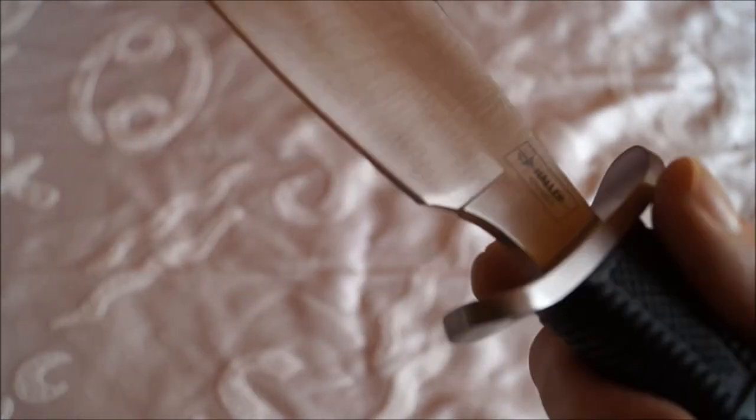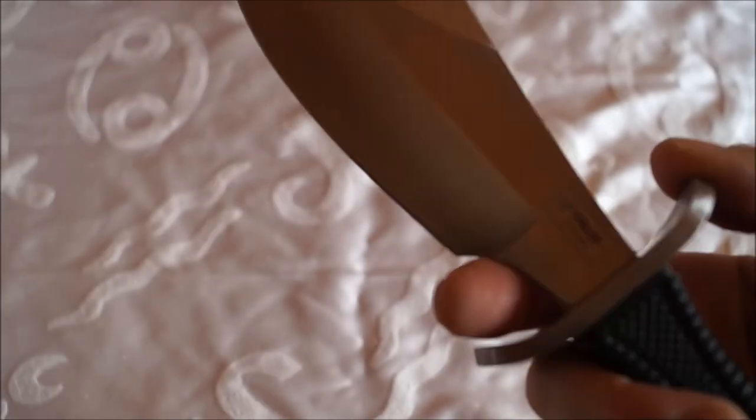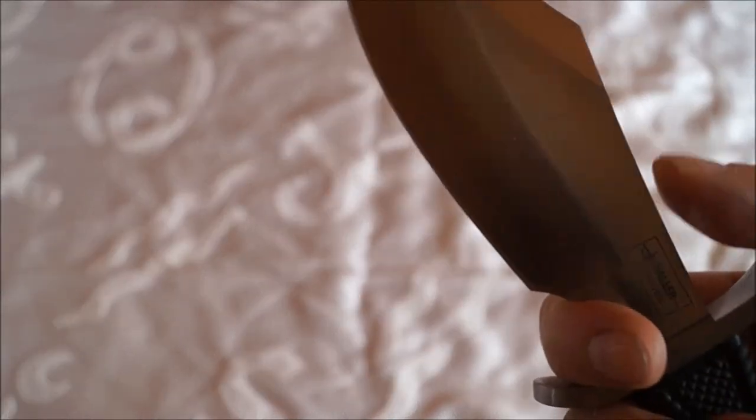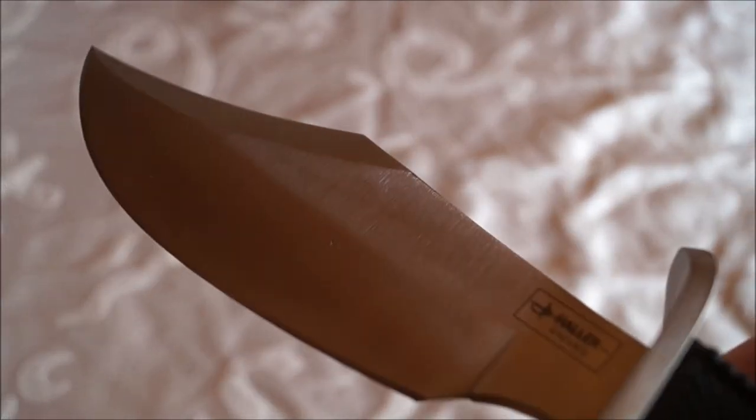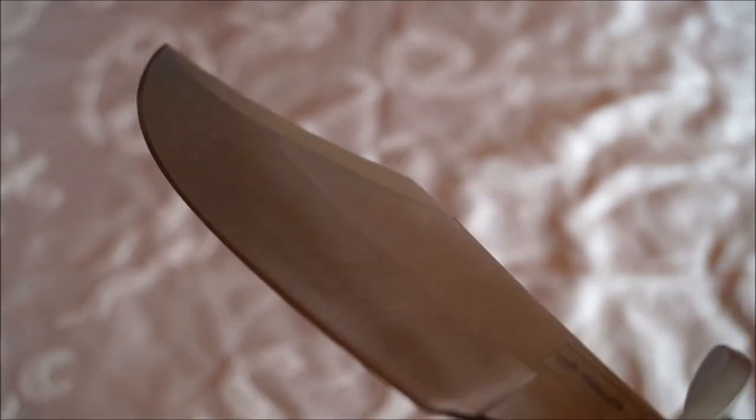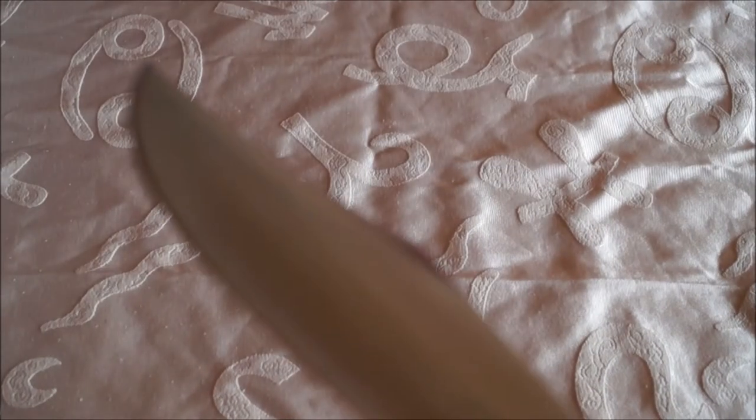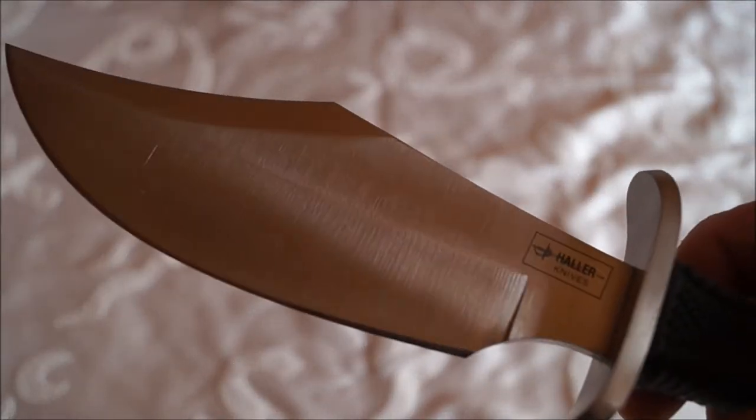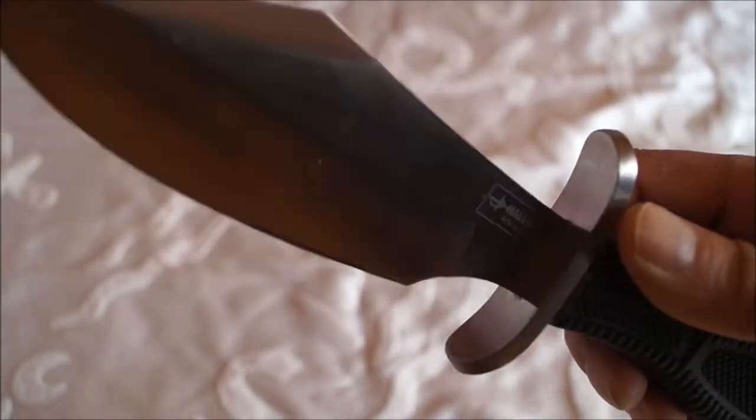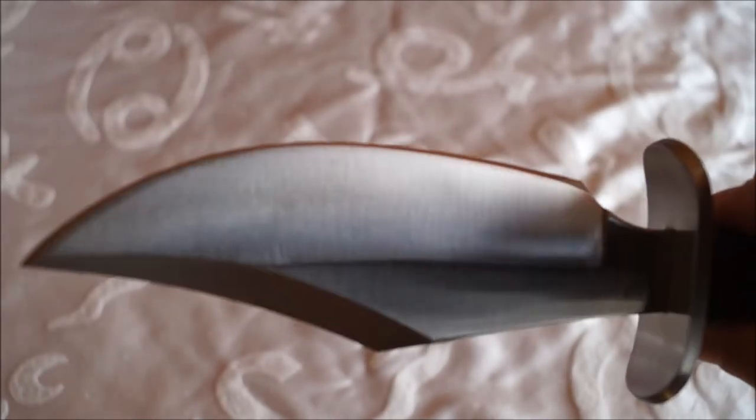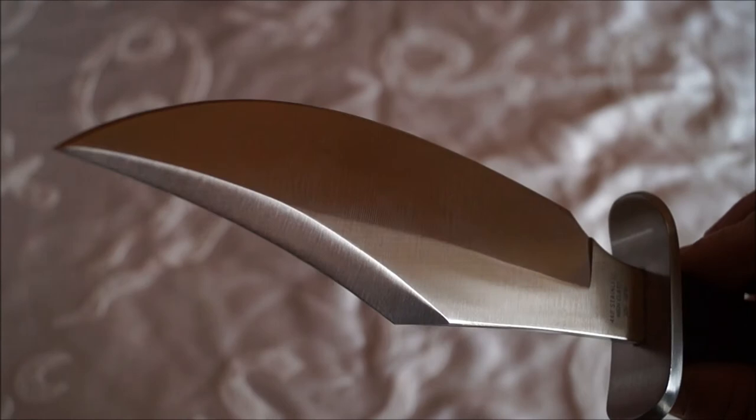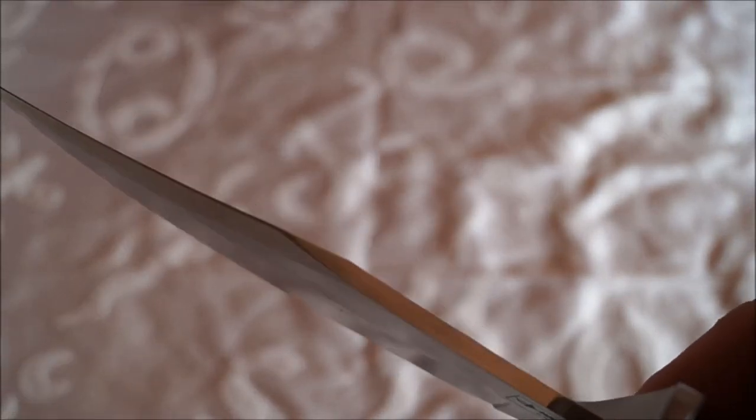Das gebogene Ricasso, geeignet für einen Vorgriff. Die schmalen Flanken, den hoch ansetzenden Flachschliff mit sekundärer Schneidphase. Die komplette Klinge ist sehr schön satiniert und sehr symmetrisch geschliffen.